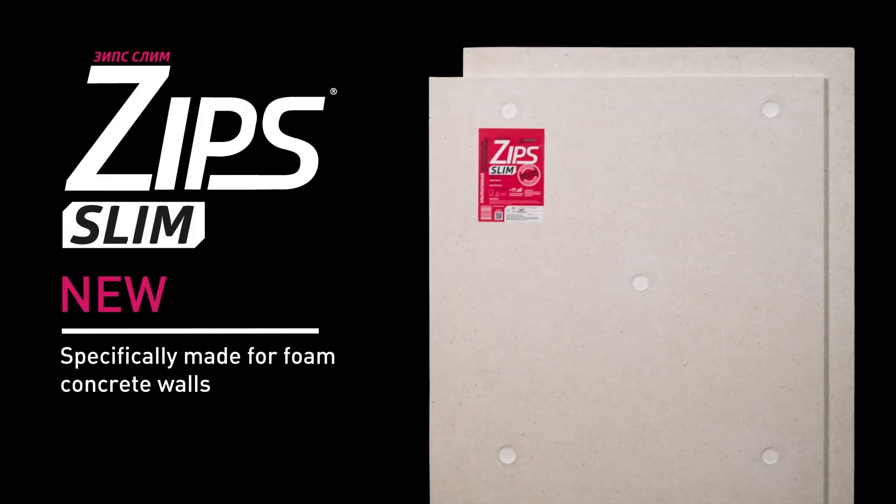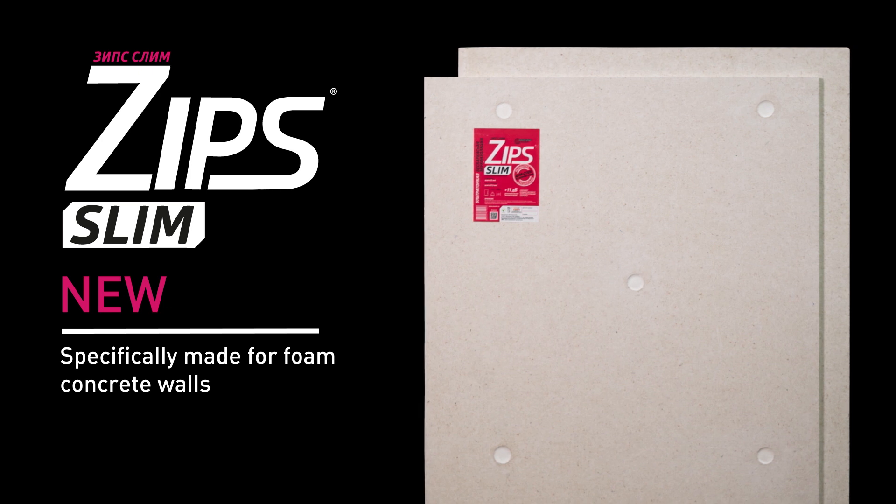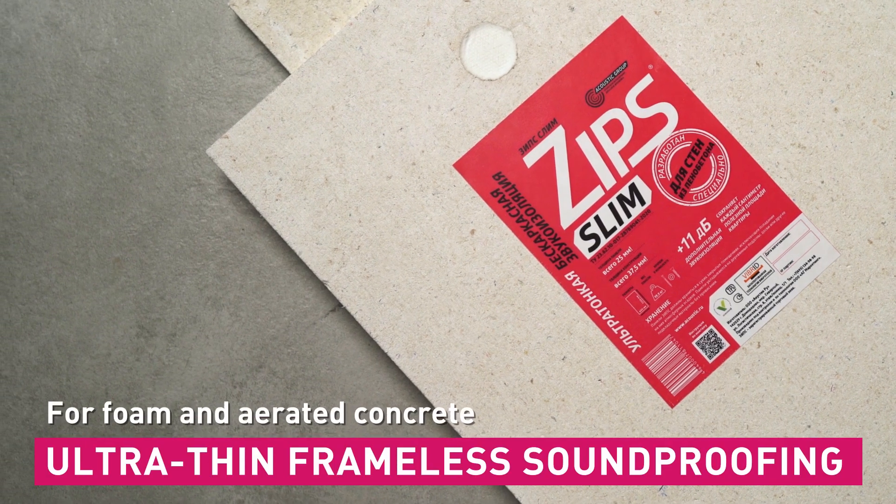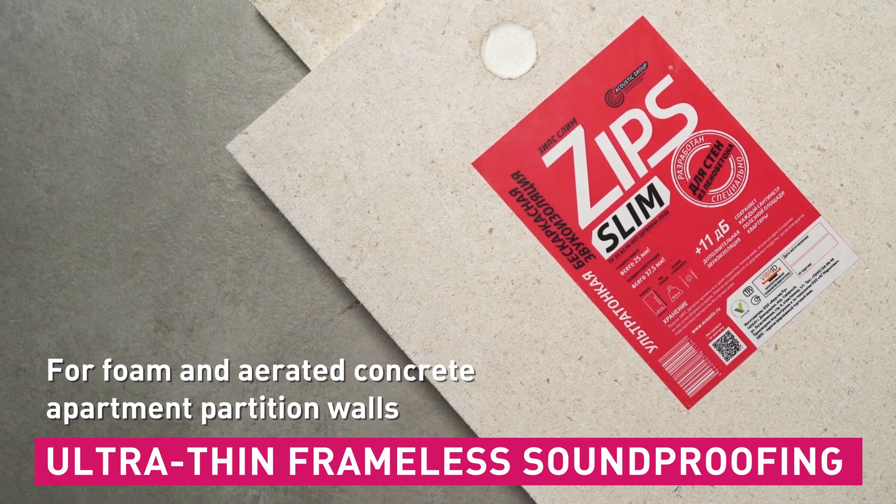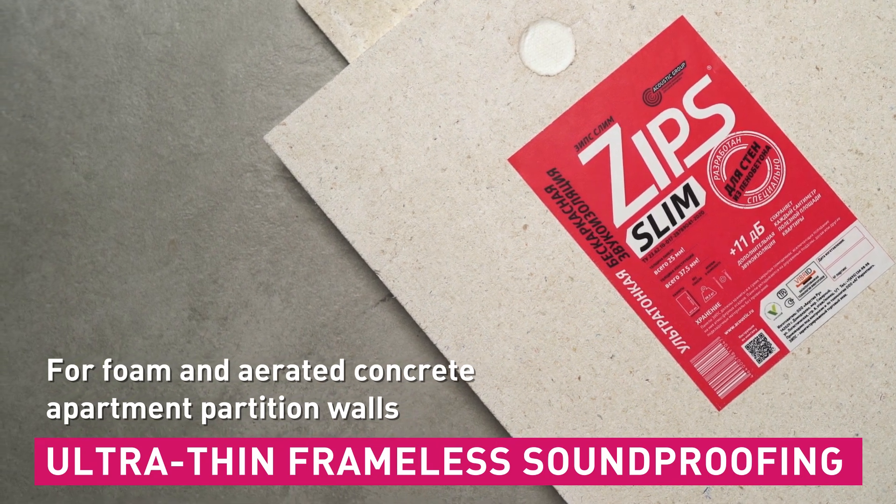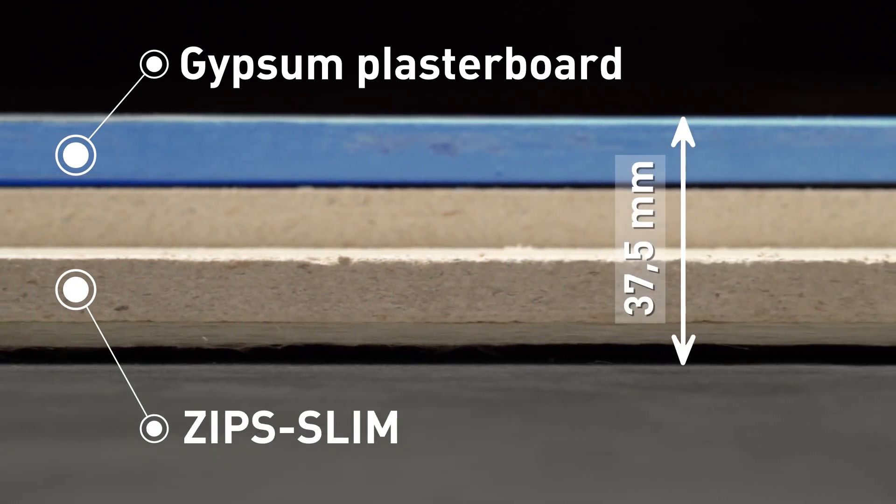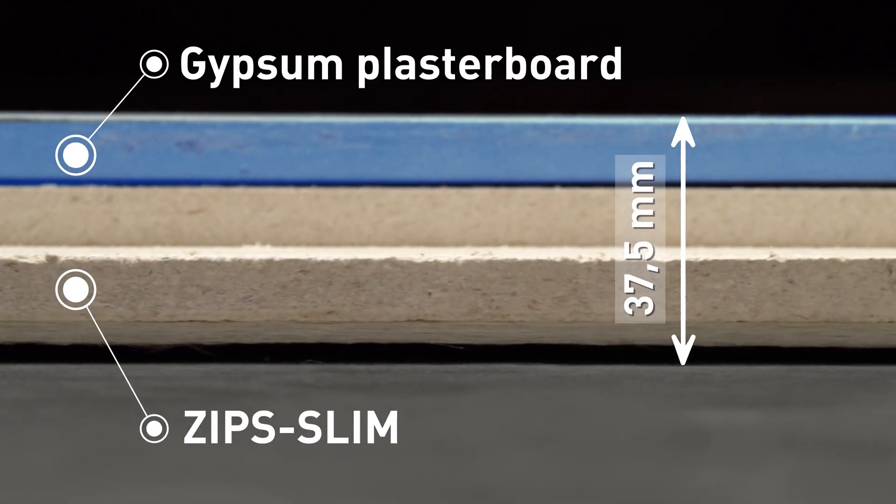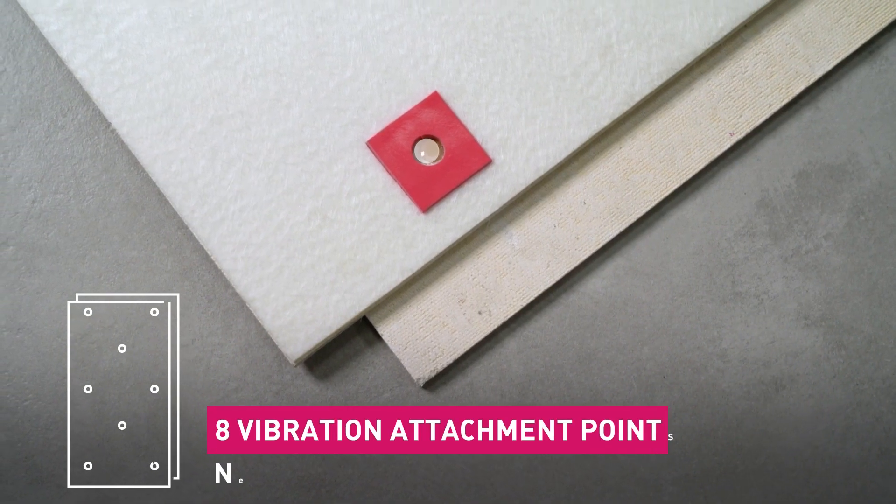Why is it so good? The Zip Slim system is an ultra-thin frameless soundproofing for foam and aerated concrete apartment partition walls. The coating is just 37.5 millimeters thick, like other panels in the line.